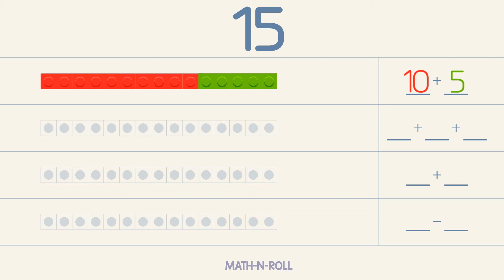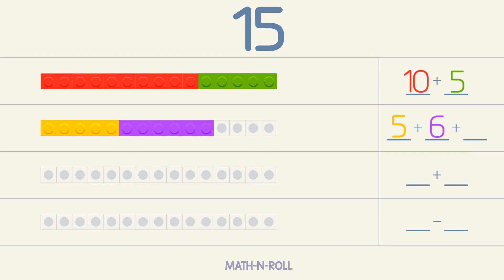Now let's make 15 by adding 3 different numbers. We can pick any number less than 15 for the first number, for example 5. Now let's add another number, 6. To make 15, we need to add 4 more pieces. So 5 plus 6 plus 4 equals 15.